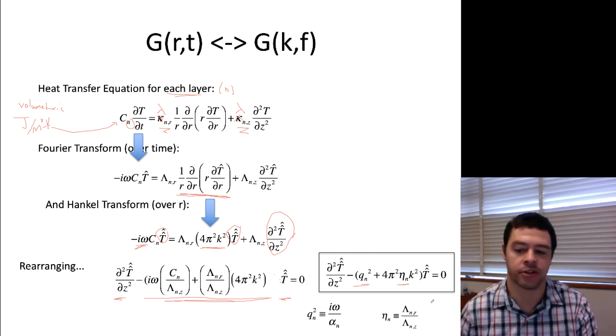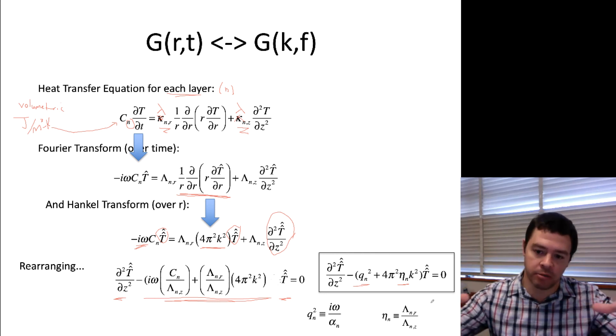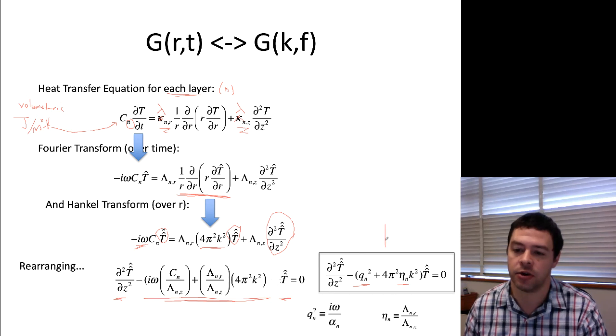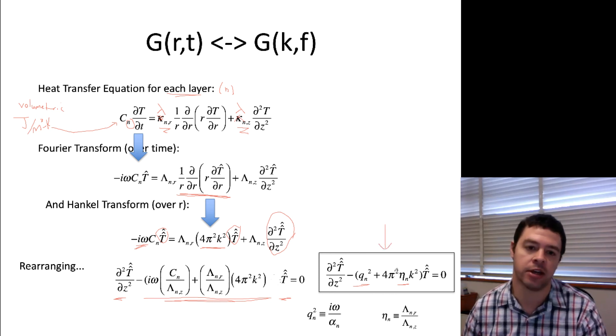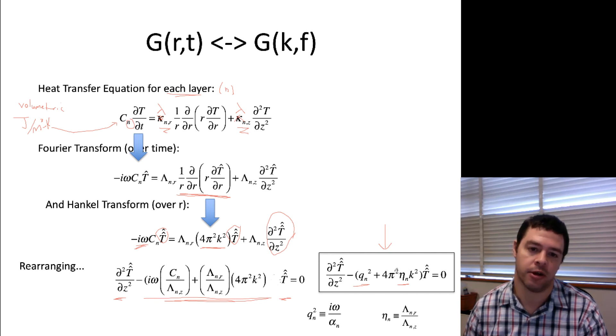And the other thing I'll define as eta, which is just the anisotropic ratio. So, the ratio of in-plane to through-plane thermal conductivity. So, this thing is what I'm going to focus on now. This thing has an analytic solution that I can write quite easily.